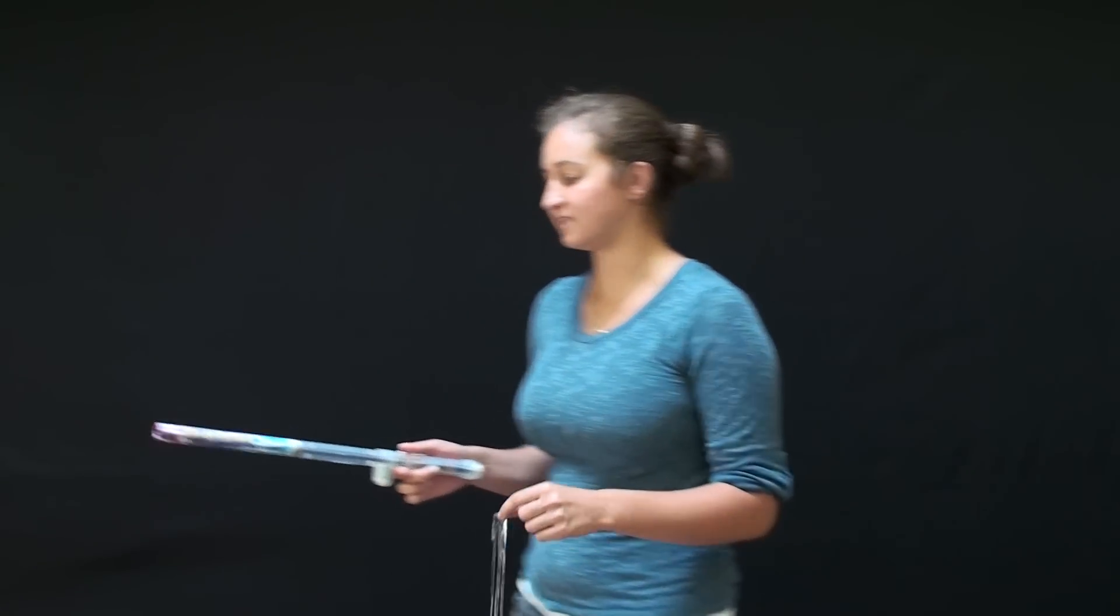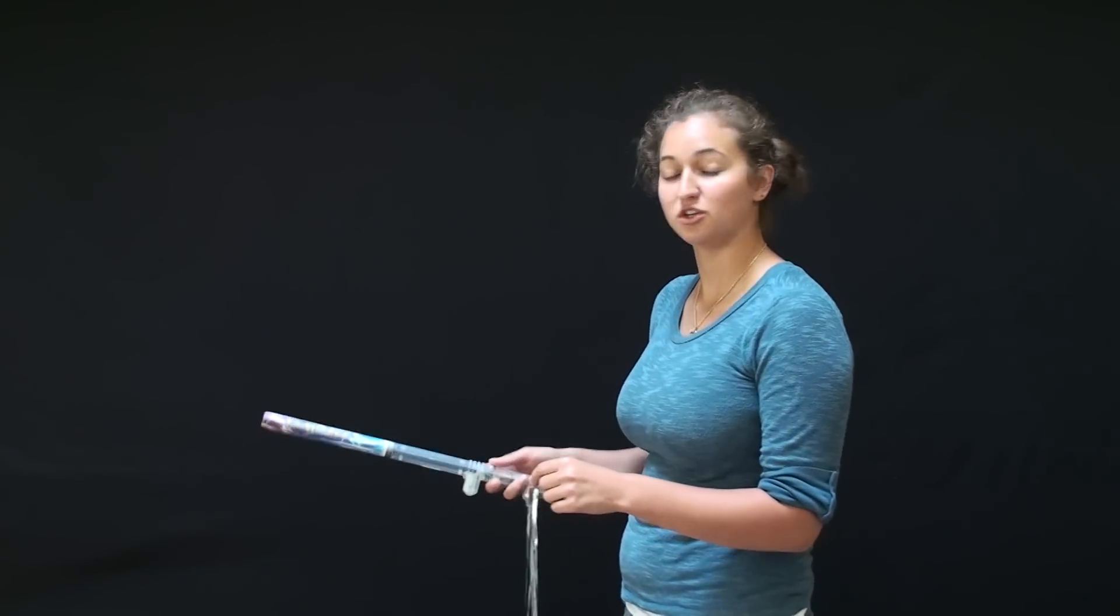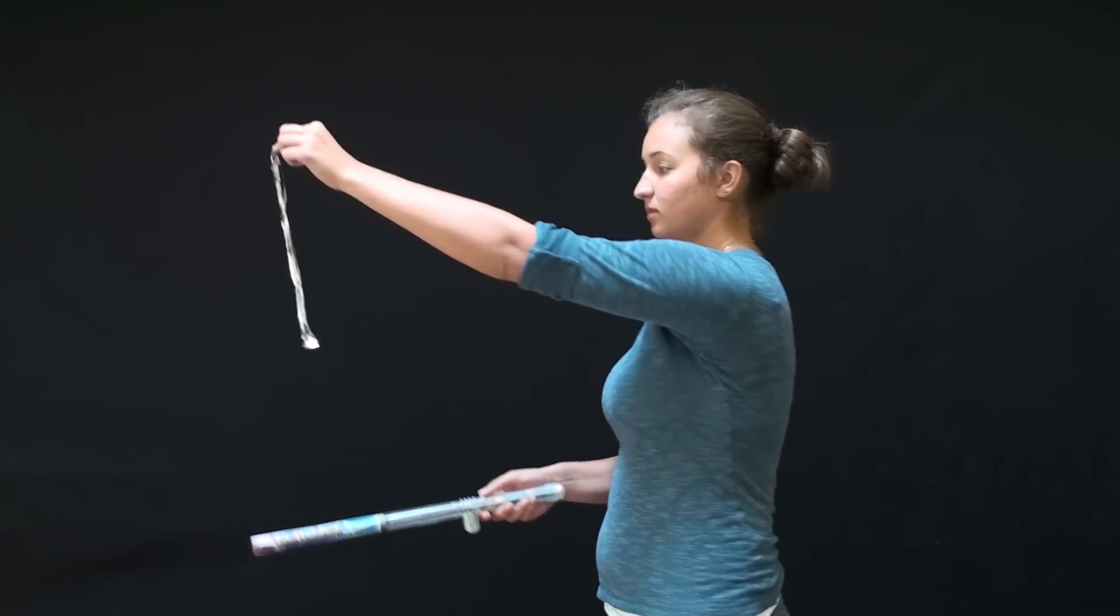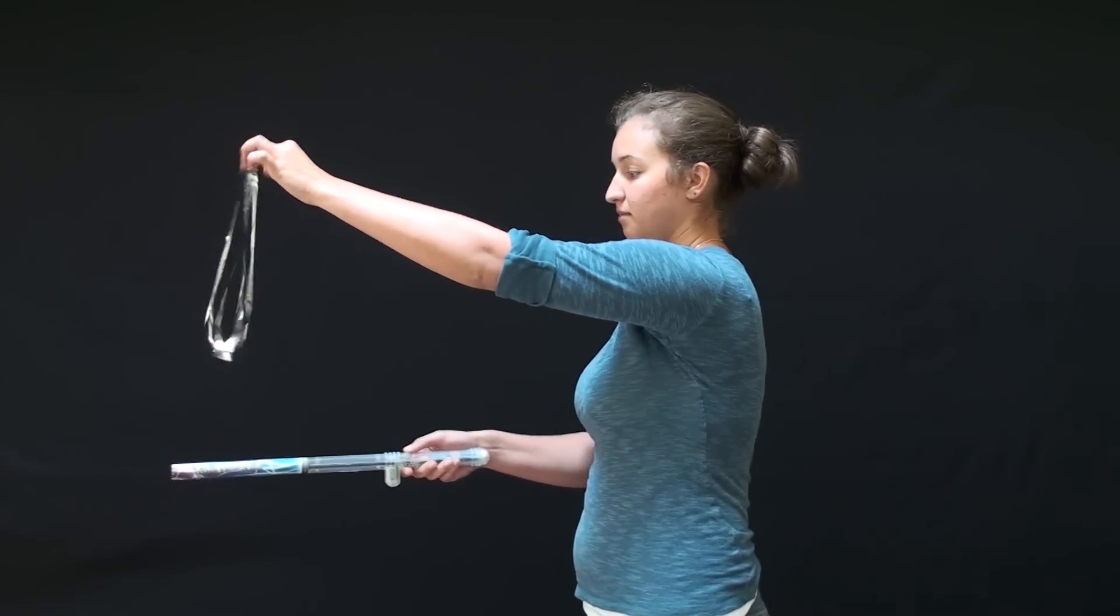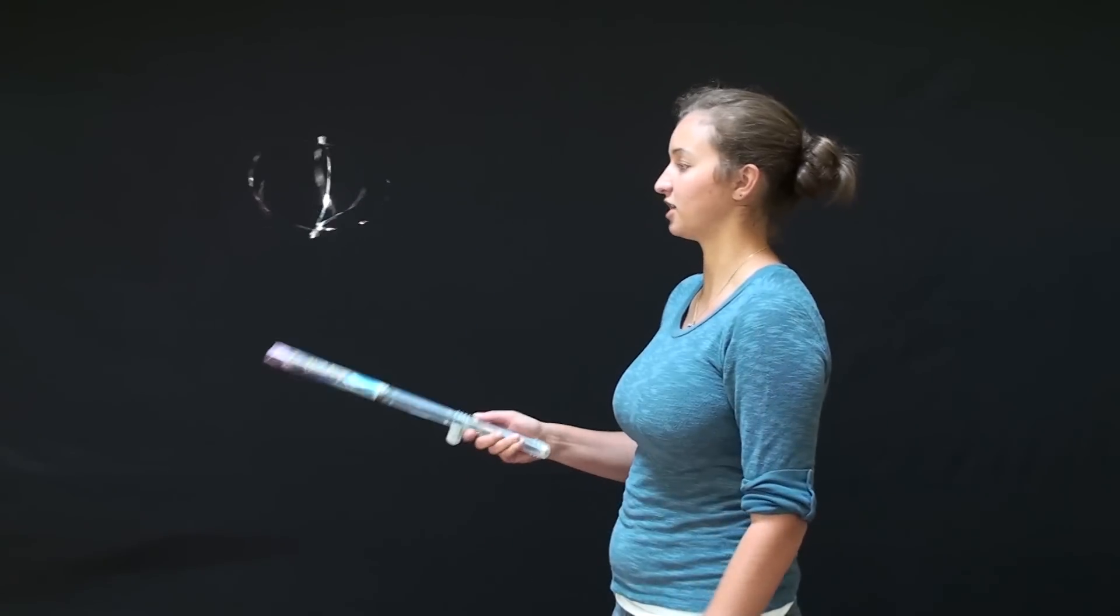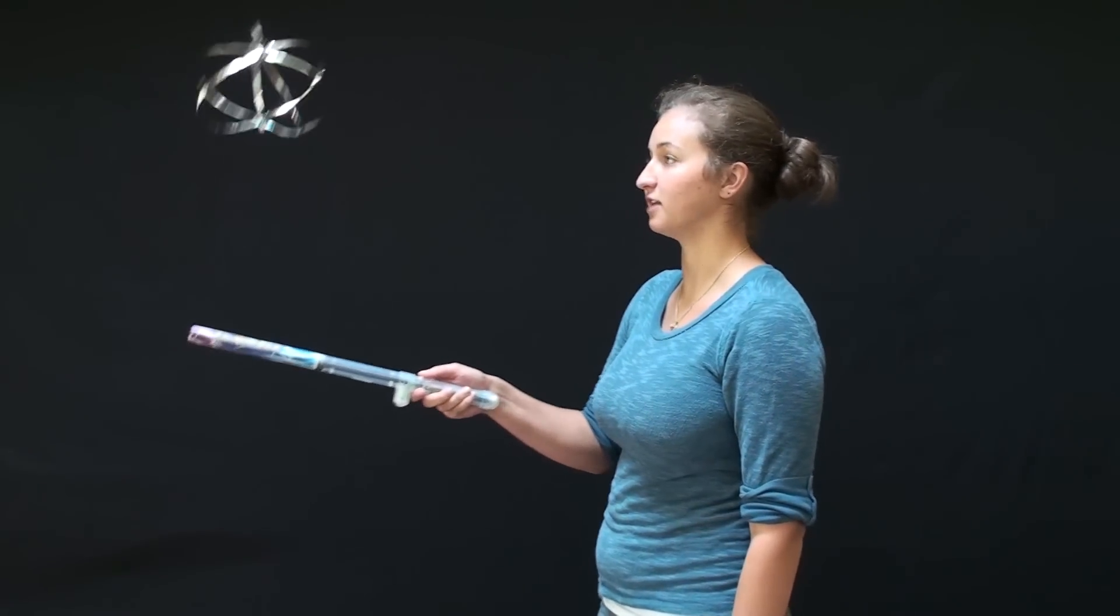When you turn on the funfly stick, positive charges accumulate on the cardboard tube. Dropping the mylar toy makes it receive the same positive charge. Since like charges repel, the toy begins to fly.